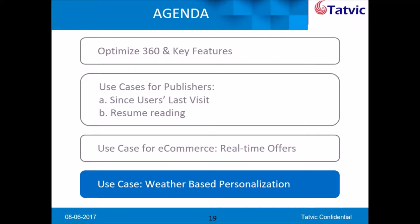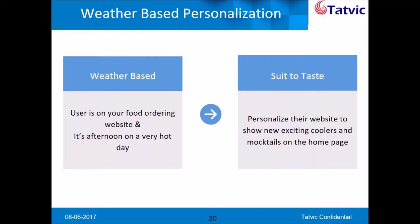Weather-based personalization is one of the best use cases for any kind of industry. India has a vast geography where different parts experience different weather. For example, Delhi and Gurgaon might be experiencing summer while a friend in Bangalore is enjoying beautiful rains. This use case focuses on the food industry and how a food ordering site can cater to both geographies according to their weather using Optimize 360.